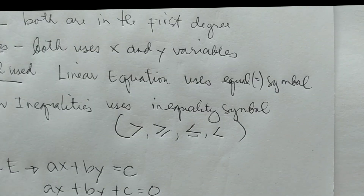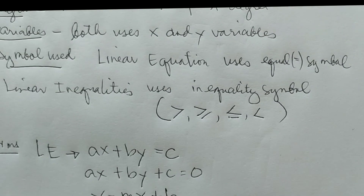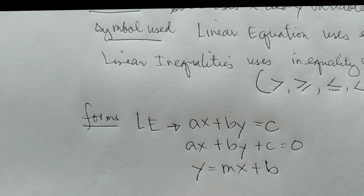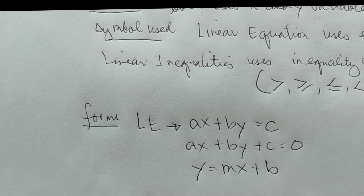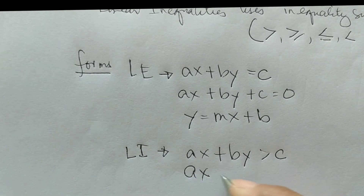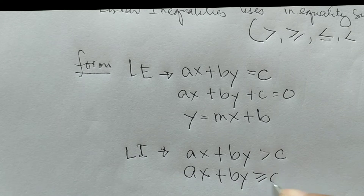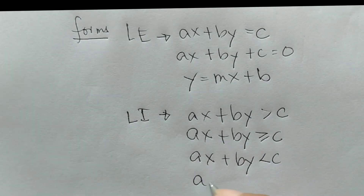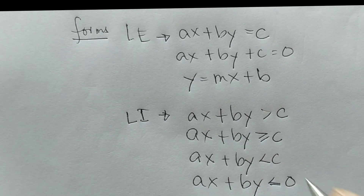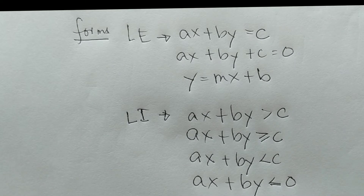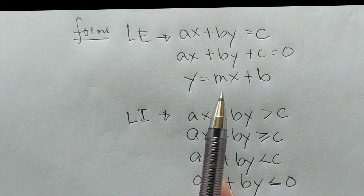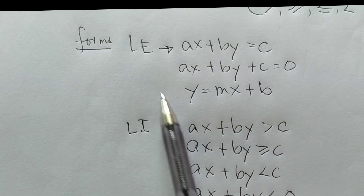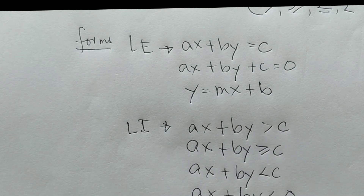For linear inequalities, the forms are: Ax plus By is greater than C; or Ax plus By is greater than or equal to C; or Ax plus By is less than C; or Ax plus By is less than or equal to C. So in terms of forms, they are different — these forms are for linear equations, and these forms are for linear inequalities in two variables.